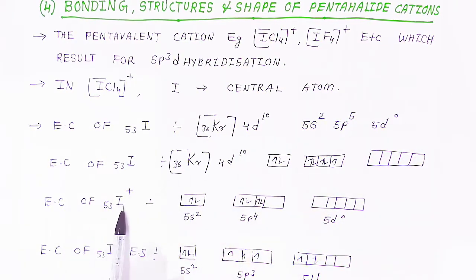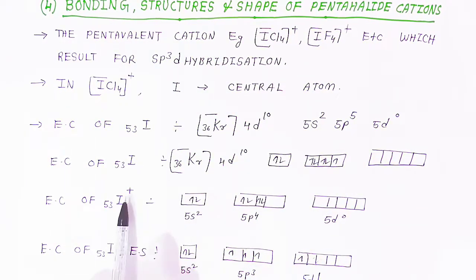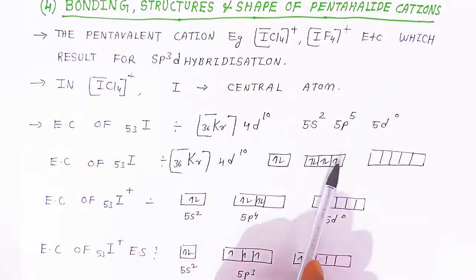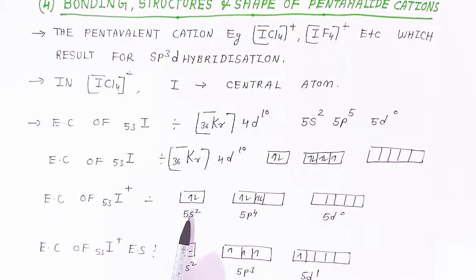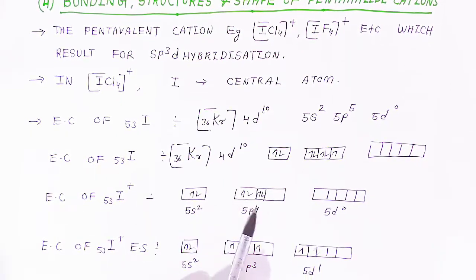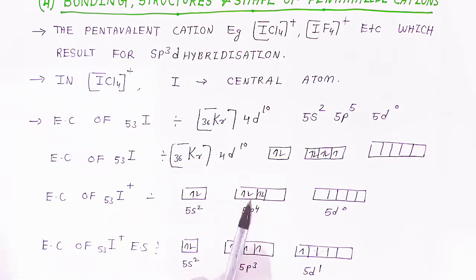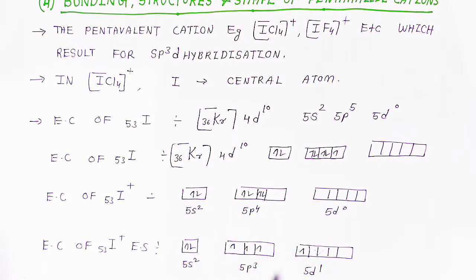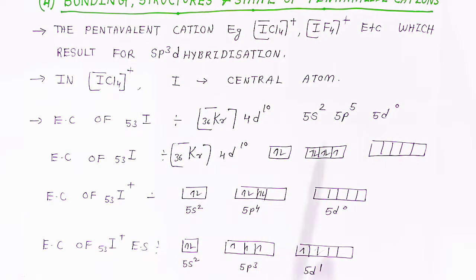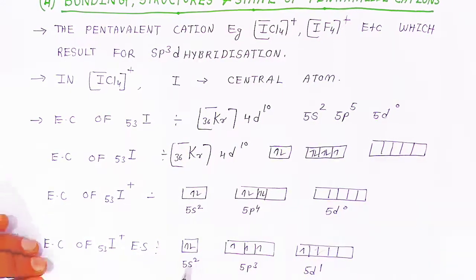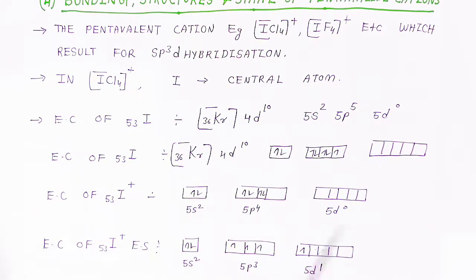Since it is a cation, iodine will lose one electron. The electronic configuration of I⁺ becomes 5s², 5p⁴. When 4 chloride atoms approach the iodine cation, excitation will take place — these two electrons will excite and become unpaired — giving 4 unpaired electrons. The electronic configuration becomes 5s², 5p³, 5d¹.